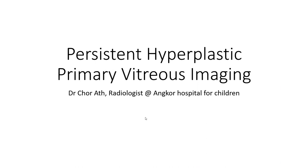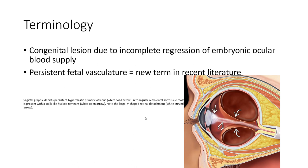Hello everyone. Today I am going to show you about persistent hyperplastic primary vitreous imaging, or we call PHPV. Regarding the terminology, this condition refers to incomplete regression of the embryonic ocular blood supply. This is called PHPV, and nowadays we usually say persistent fetal vasculature, or PFV.